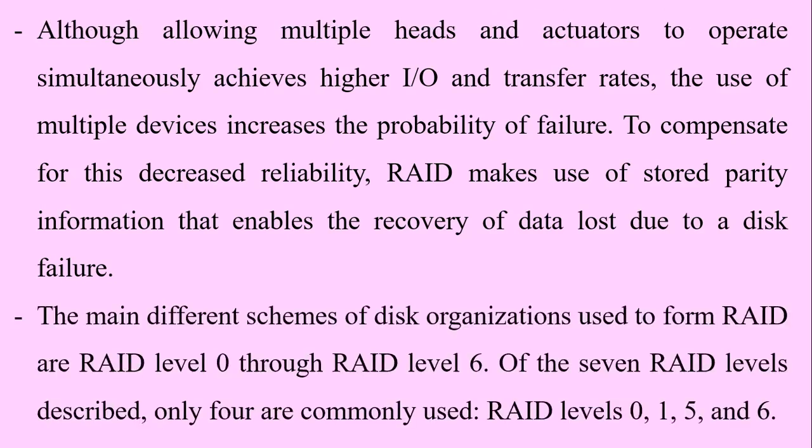The main different schemes of disk organizations used to form RAID are RAID level 0 through RAID level 6. Of the seven RAID levels described, only four are commonly used: RAID level 0, RAID level 1, RAID level 5, and RAID level 6. Let us now look at each of these RAID levels and their responsibilities.